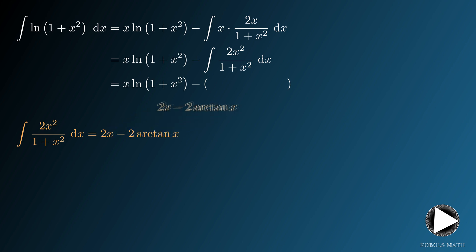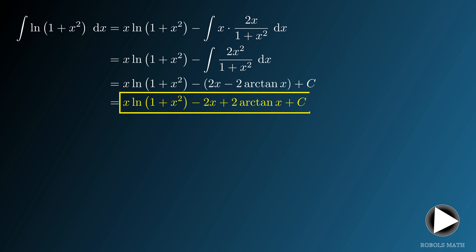Thus, the complete antiderivative that we are looking for is x times the natural logarithm of 1 plus x squared minus 2x plus 2 arctan x plus the integration constant c.